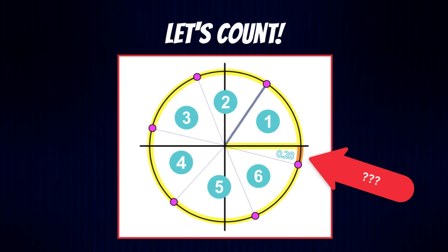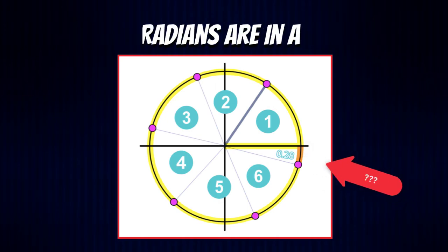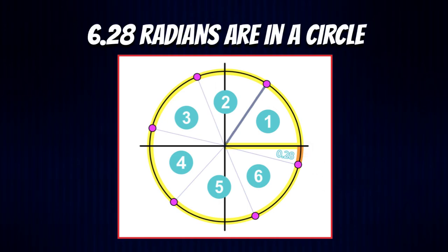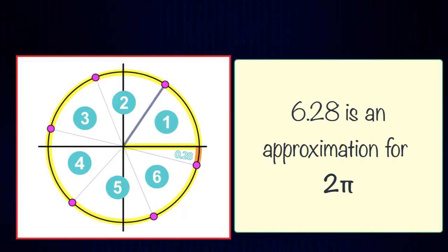Mathematicians a long time ago discovered that there were 0.28 radians left in the circle. That brings us to our total: 6.28 radians are in a circle. But 6.28 is an approximation for two pi.